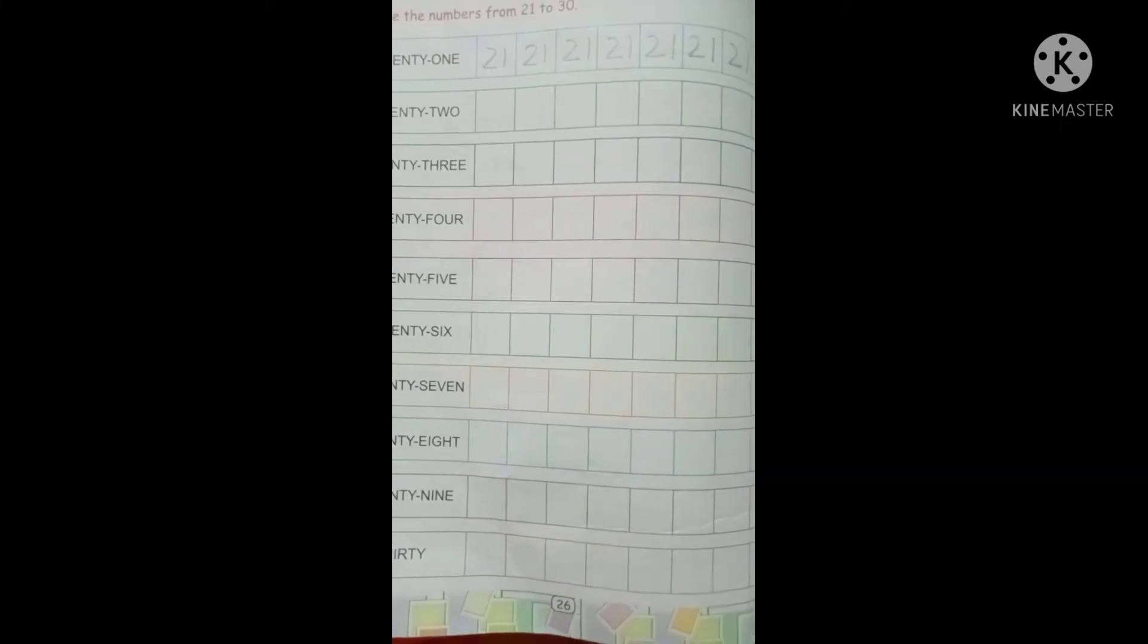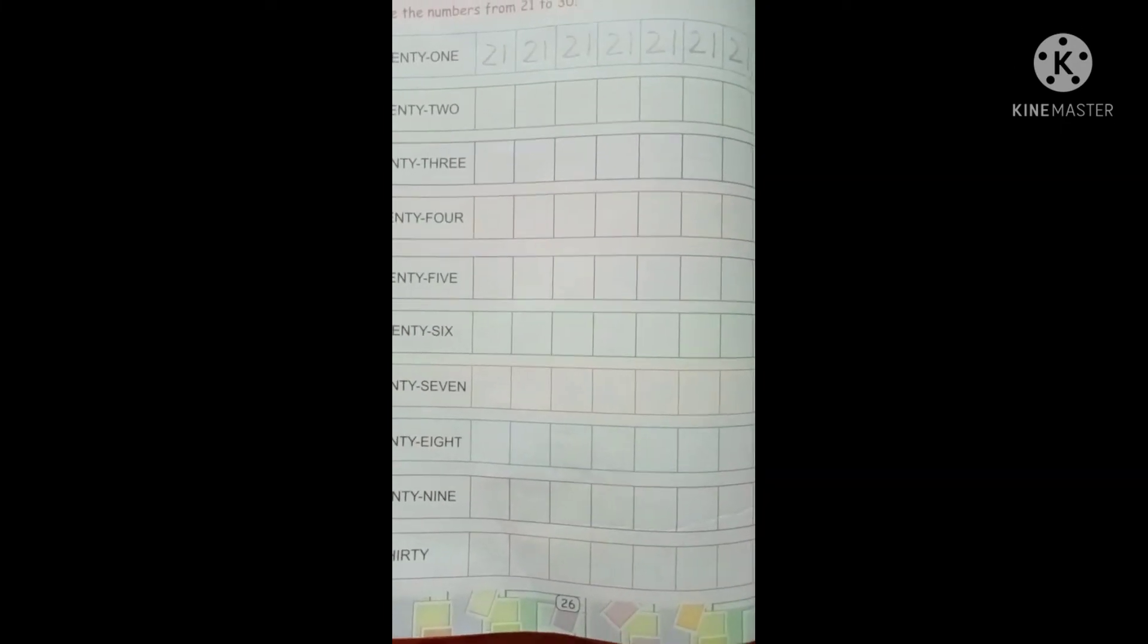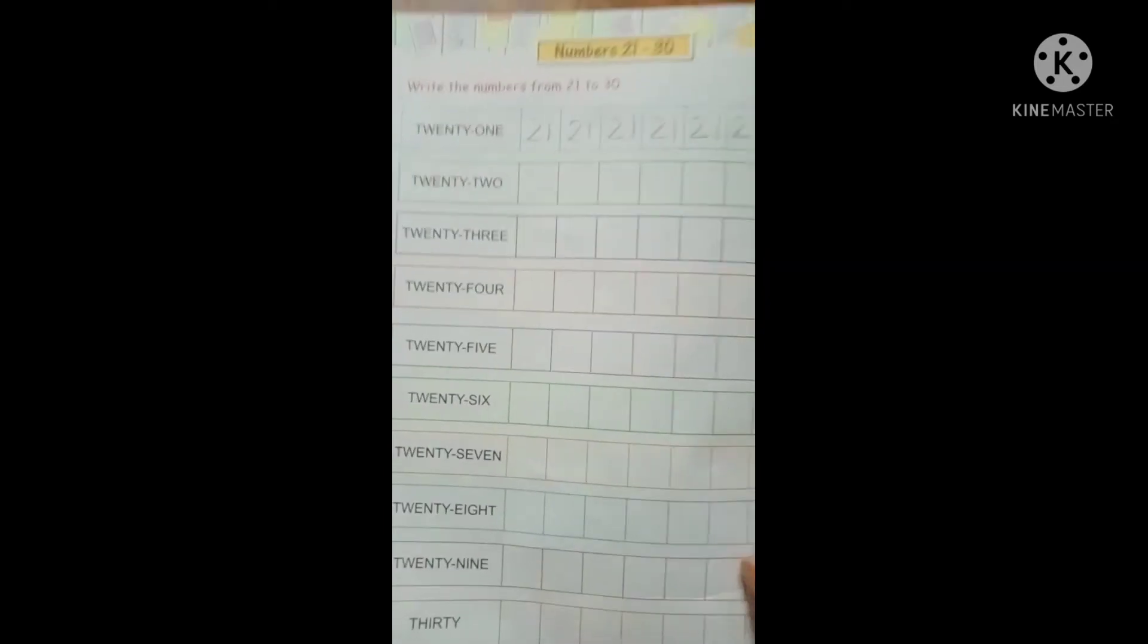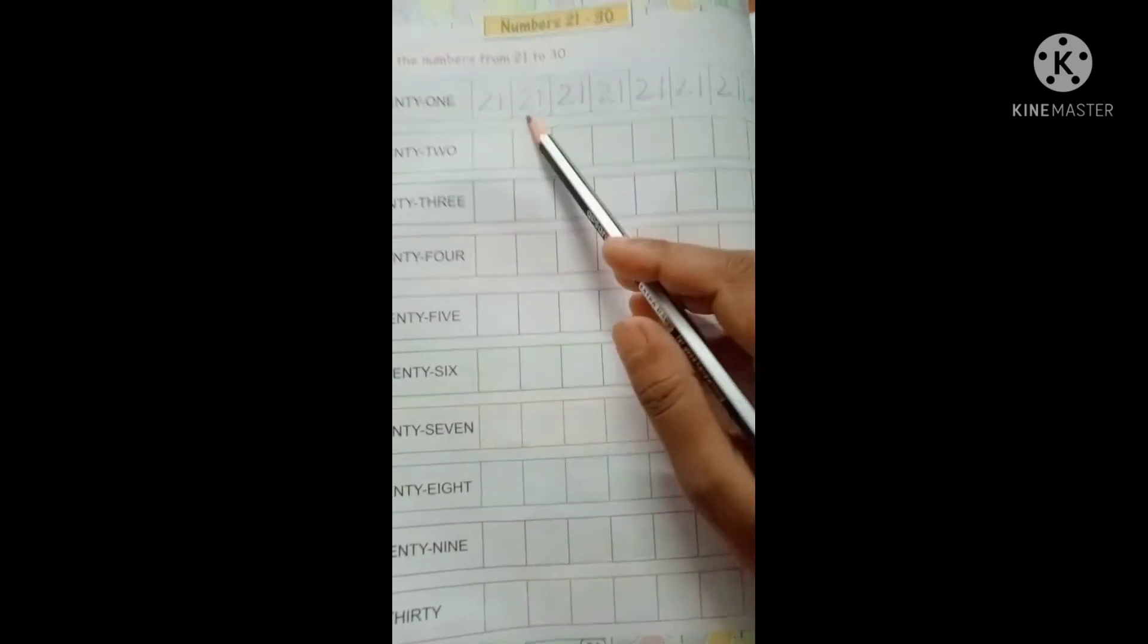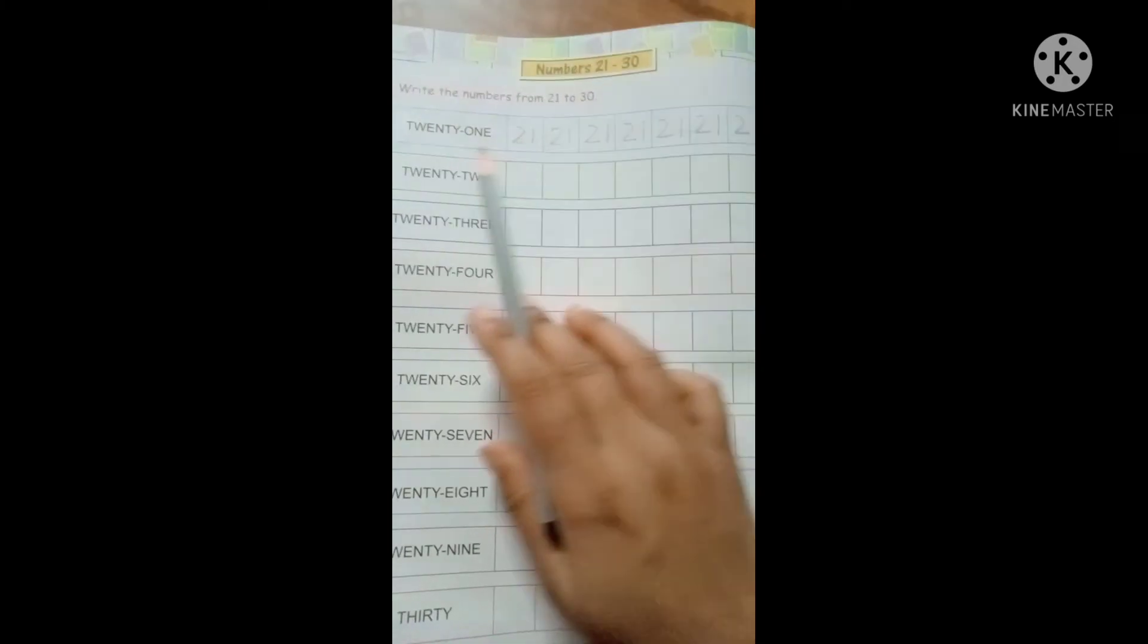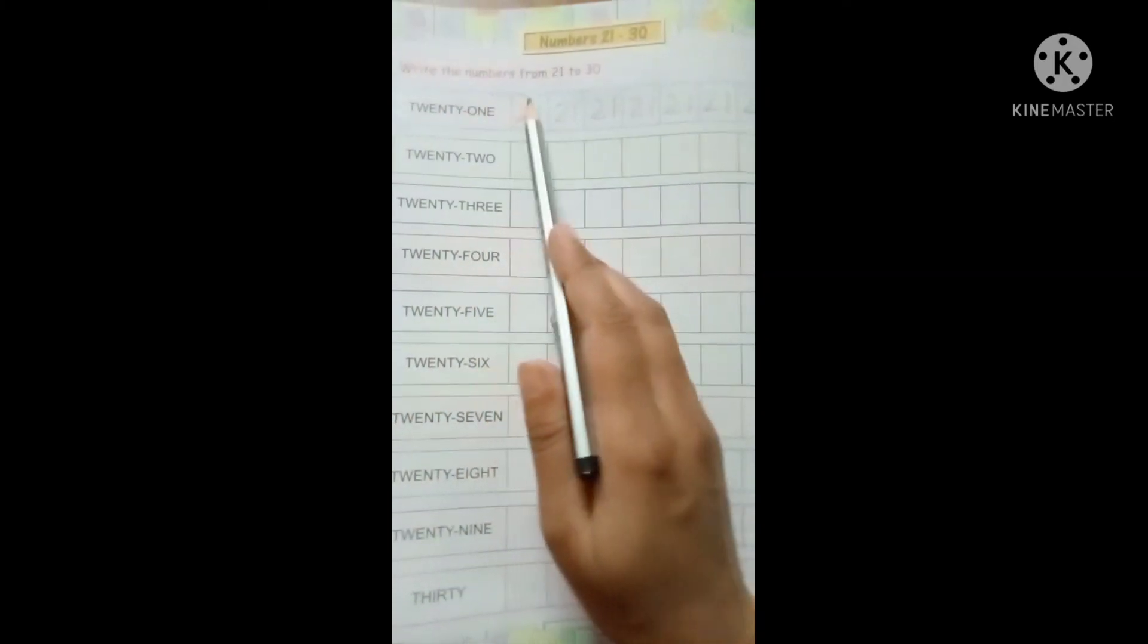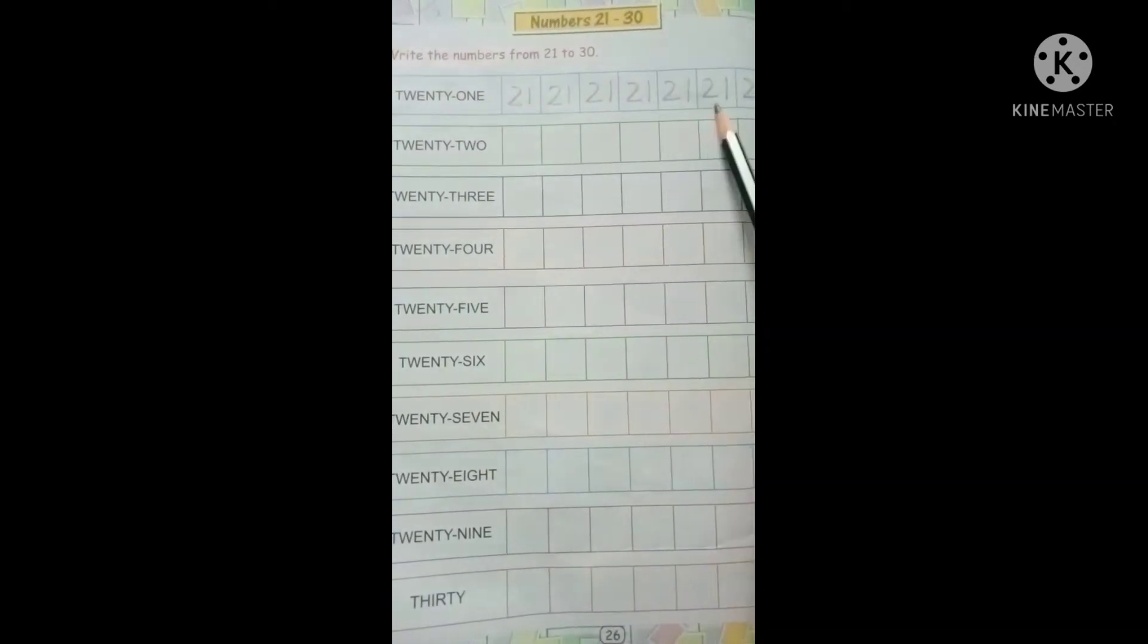Today we are going to start our maths class from page number 26: numbers 21 to 30. Write the numbers from 21 to 30, 21 like this way you write down. Write down 22, write down the number 23.